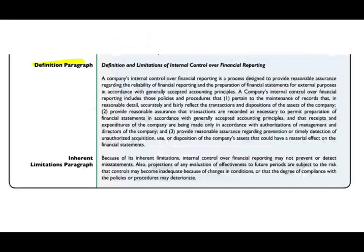There is also a definition paragraph — a boilerplate definition telling users what internal control is. A company's internal control is a process designed to provide reasonable assurance regarding the reliability of financial reporting and the preparation of financial statements for external purposes in accordance with GAAP. It includes policies and procedures pertaining to the maintenance of records that in reasonable detail accurately and fairly reflect transactions and disposition of assets, provide reasonable assurance that transactions are recorded as necessary, and provide reasonable assurance regarding prevention or timely detection of unauthorized acquisition, use, or disposition of the company's assets.